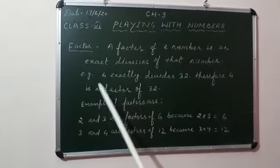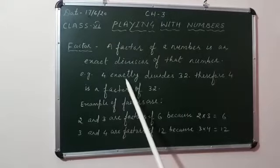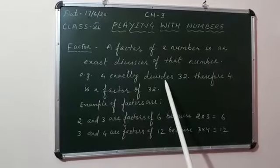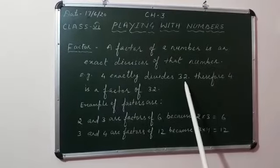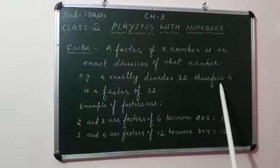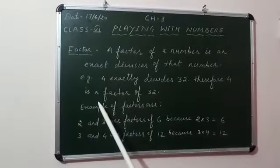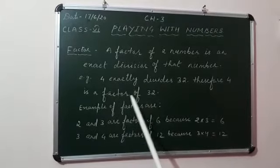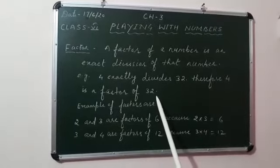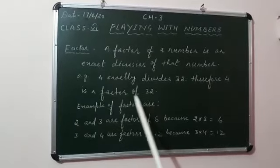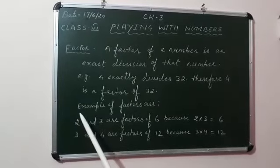Example: 4 exactly divides 32. Therefore, 4 is a factor of 32. Look at another example.